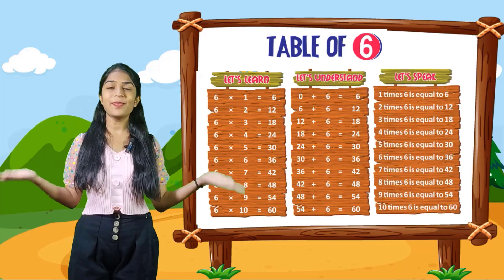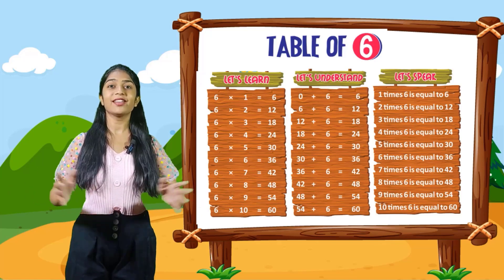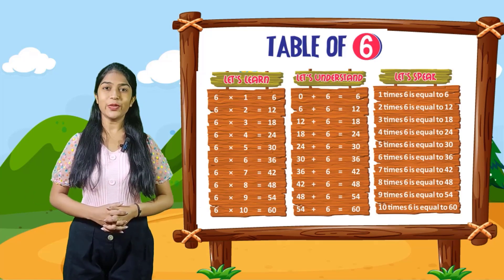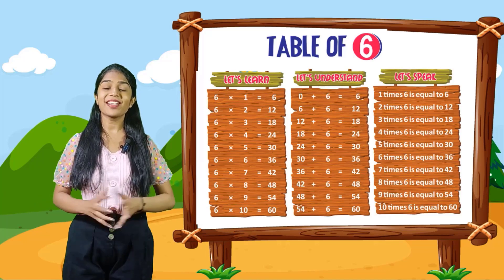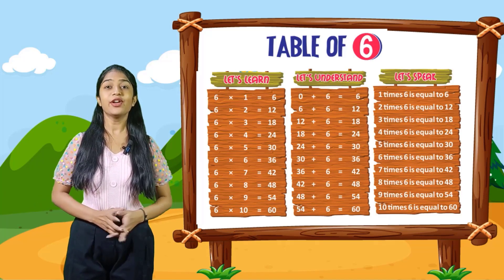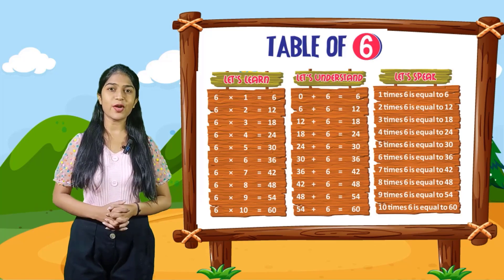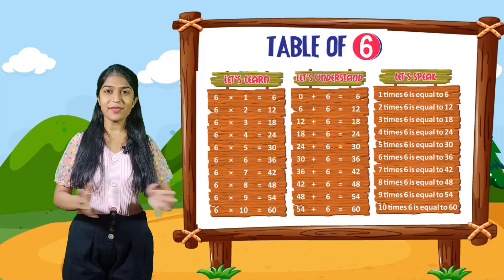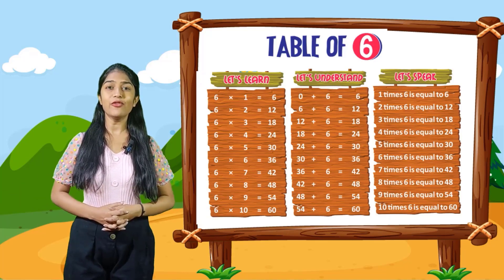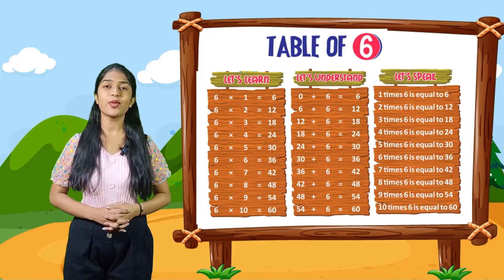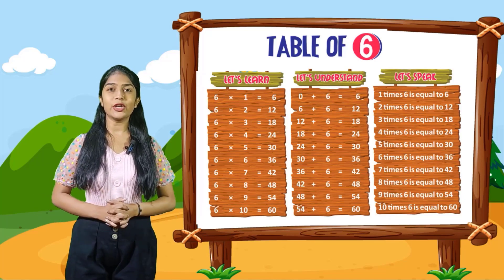So now let's speak. You have to speak with me. 1 times 6 is equal to 6. 2 times 6 is equal to 12. 3 times 6 is equal to 18. 4 times 6 is equal to 24. 5 times 6 is equal to 30. 6 times 6 is equal to 36. 7 times 6 is equal to 42. 8 times 6 is equal to 48. 9 times 6 is equal to 54. 10 times 6 is equal to 60.